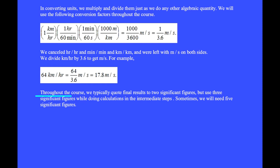Throughout the course, we typically quote final results to two significant figures. But we use three significant figures while doing calculations in the intermediate steps. Sometimes, we will need five significant figures.